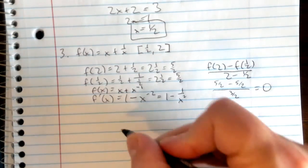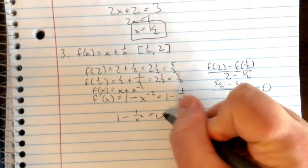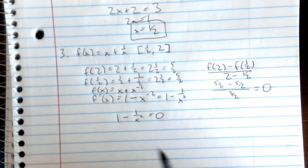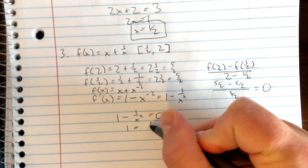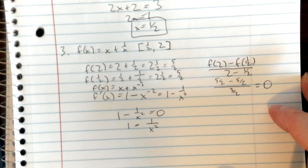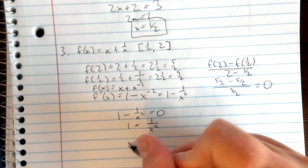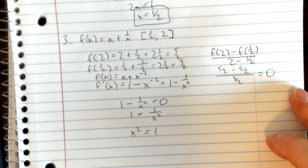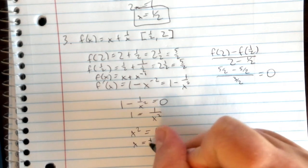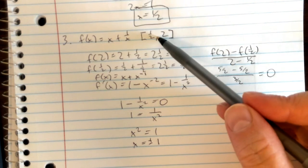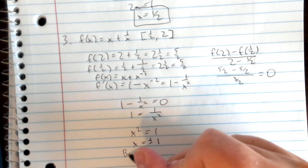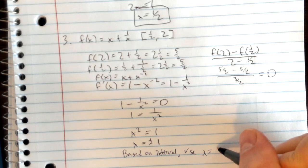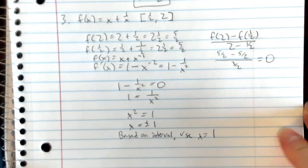Set 1 minus 1 over x squared equal to 0. Add the fraction term to both sides, then multiply by x squared to get x squared equals 1, so x equals plus or minus 1. Going back to our interval from 1 half to 2, we use x equal positive 1. So that's the answer for number 3.